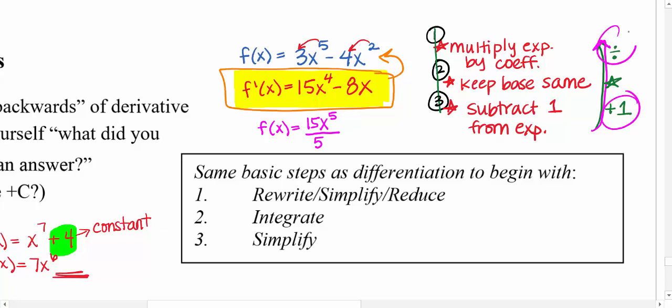And now let's go through this from bottom to top. So I'm going to add 1 to my exponent. So that would be a 5. I keep the base the same, which I've already done. And I divide by that new exponent. Add 1. Divide.